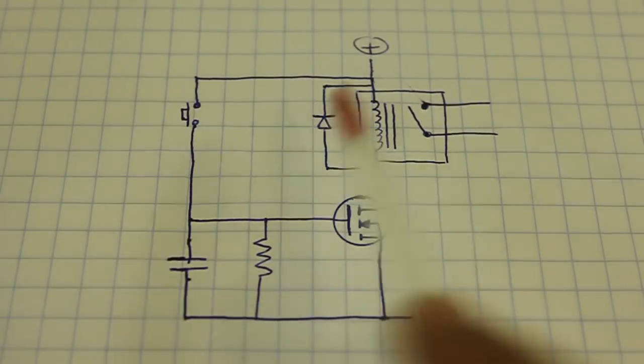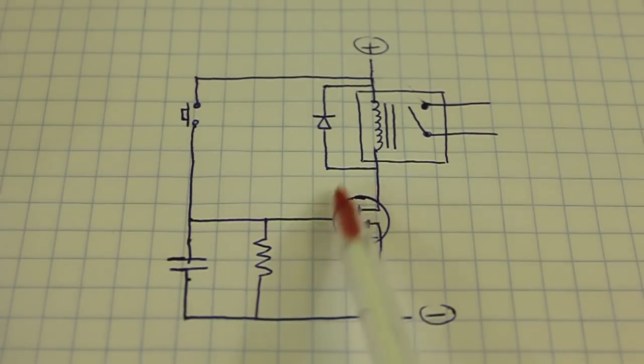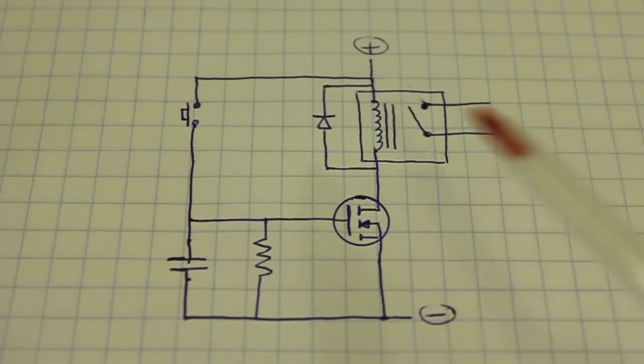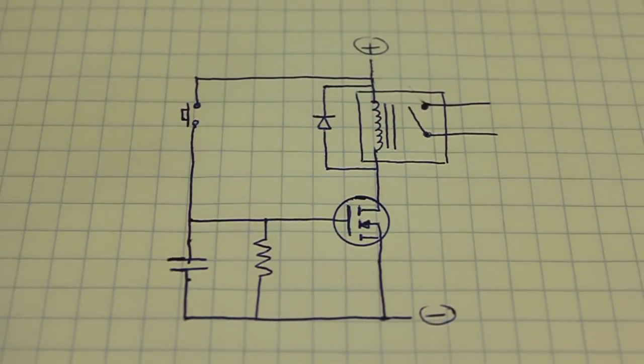This diode is here to protect the MOSFET from the voltage spikes of the coil of the relay.